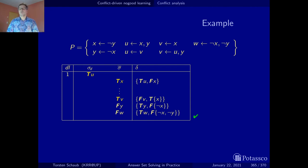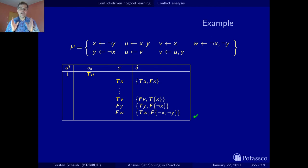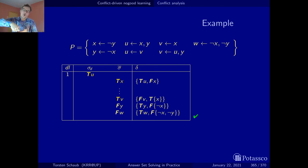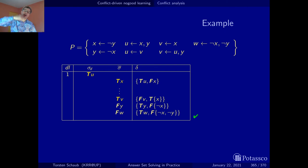I hope this illustrates not only conflict analysis but the global setting. In classical backtracking, you go back to the next level and flip the decision. Here, first we jumped back several levels — only two in our case. But then we did not flip the decision literal.